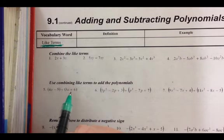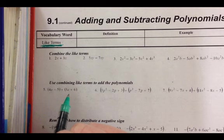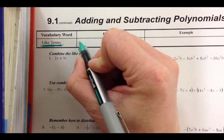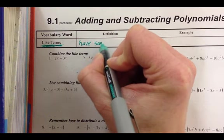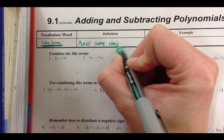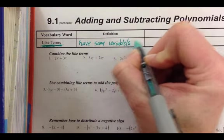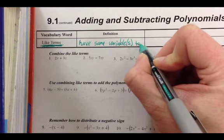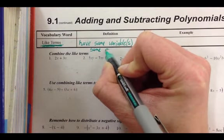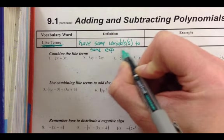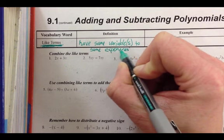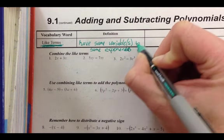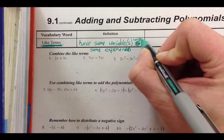I guess the biggest vocabulary word for the entire chapter is like terms. Remember that like terms have the same variables to the same exponents, or with the same exponents. Not to, we said with, that's a better word.